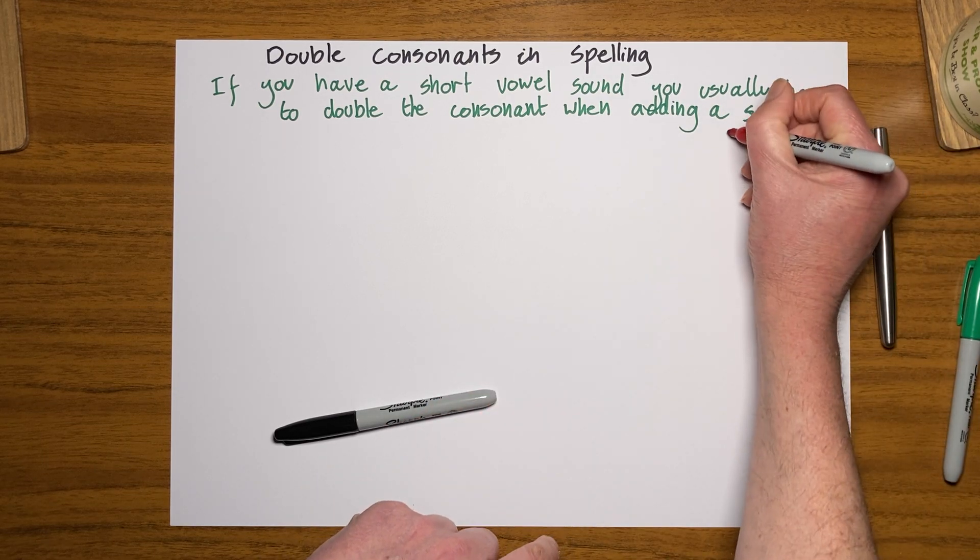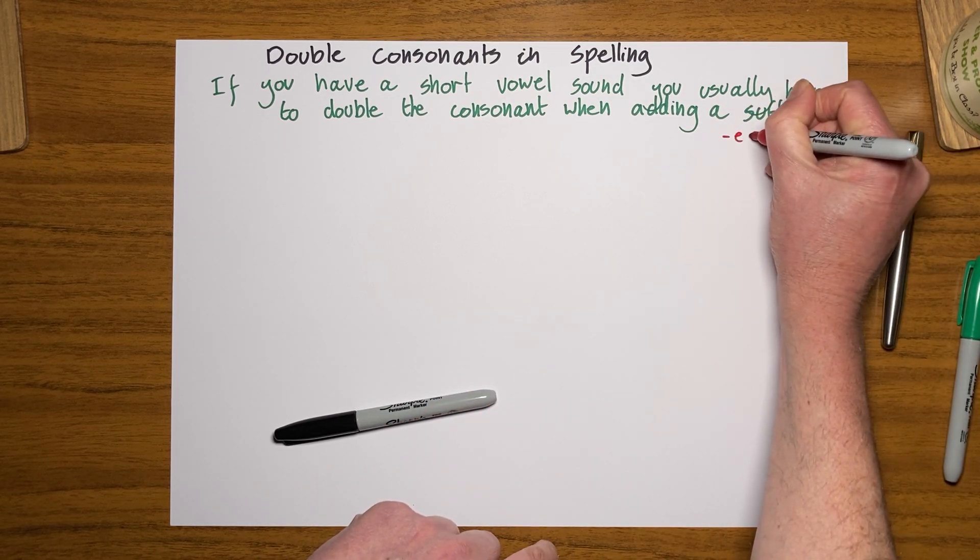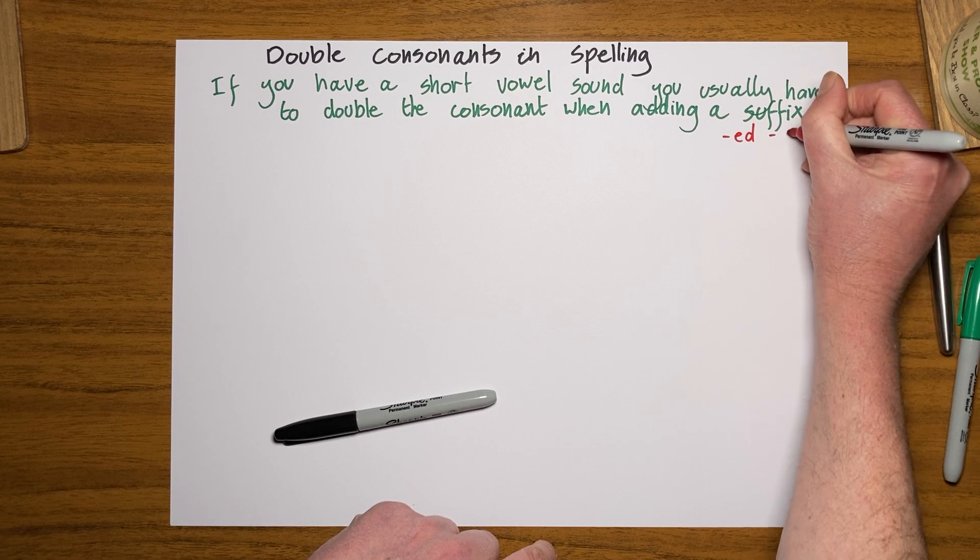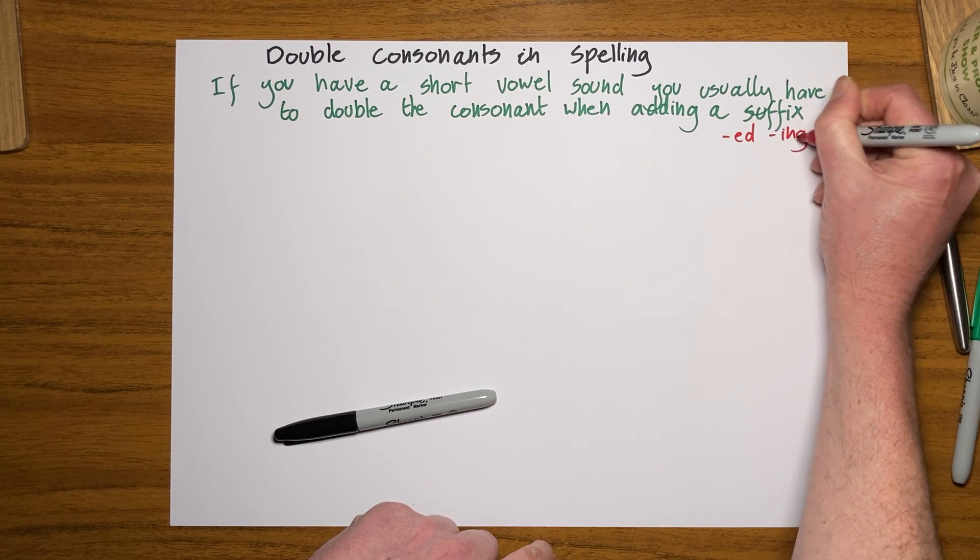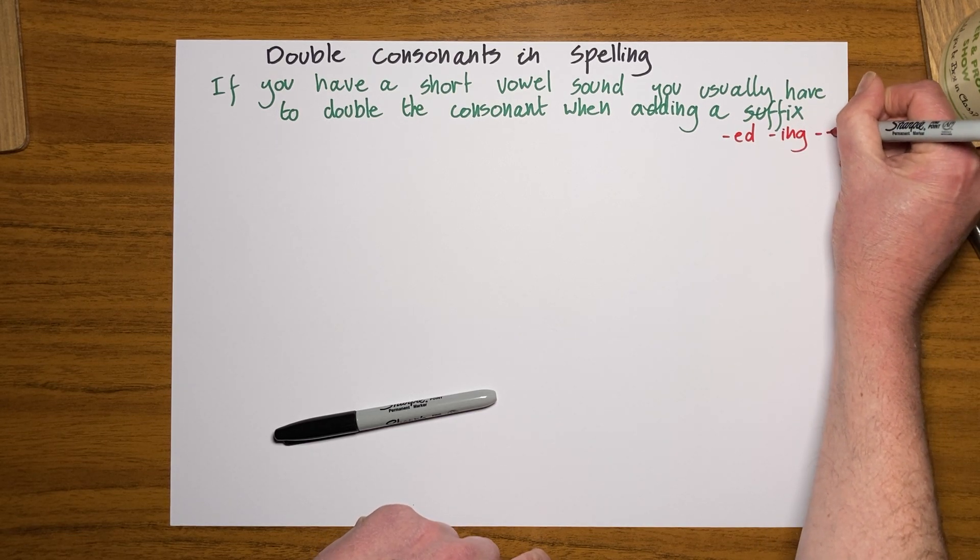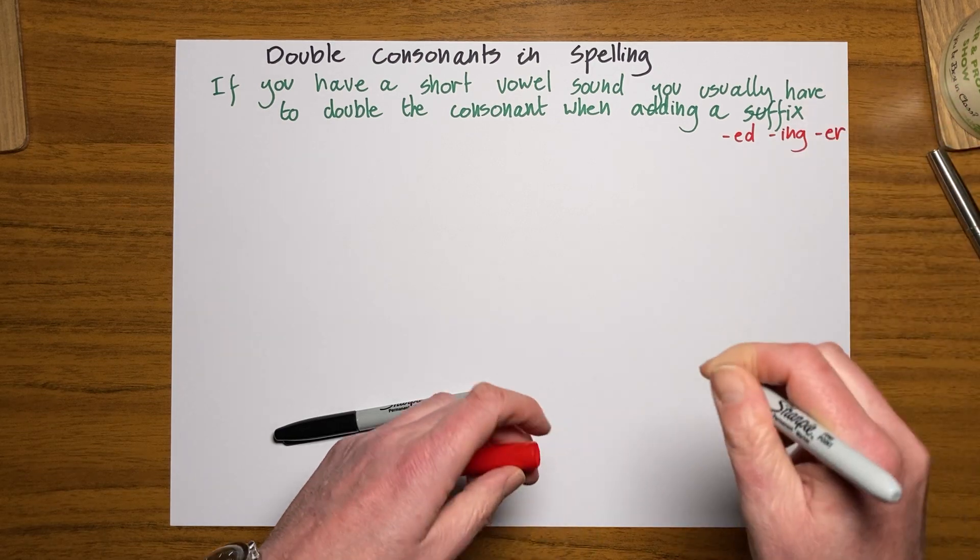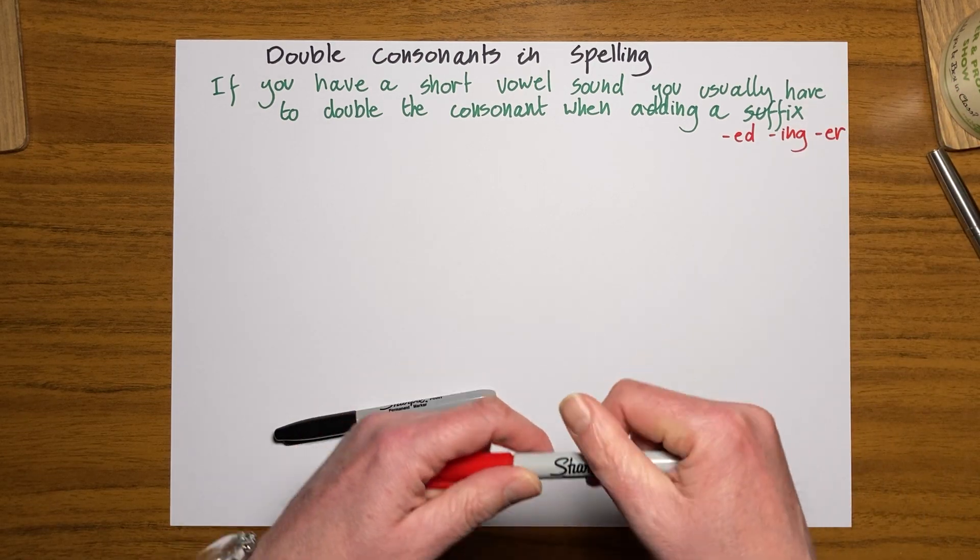Just to give you an example, it's things like I might add, for example, an ED or ING, or I might add an ER. So let's have a look and get straight into it.